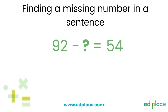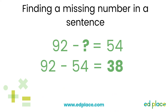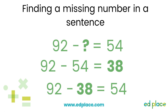Now time for the final one to look at together. 92 take away something equals 54. The missing number is in the middle of the sentence, so we should do a subtraction: 92 take away 54 equals 38. Let's put that missing number 38 into the original question: 92 take away 38 equals 54.